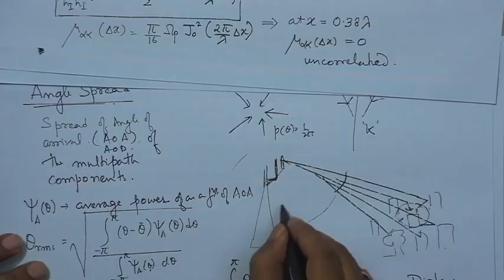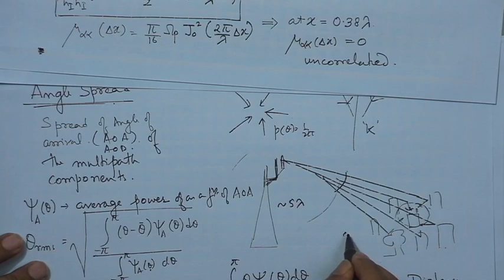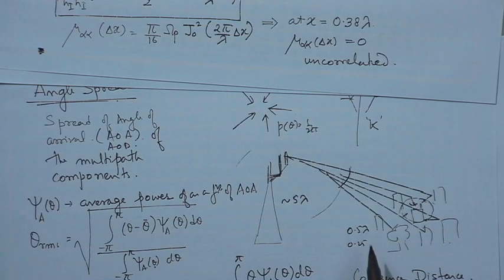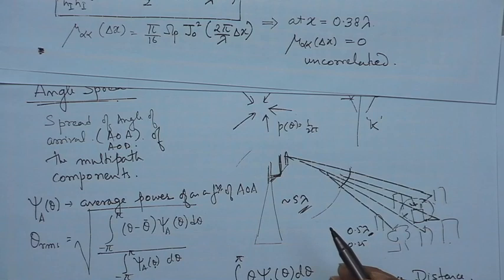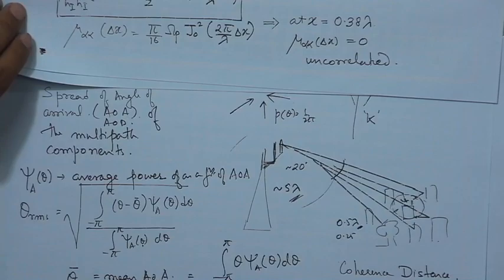At the base station, the coherence distance is roughly 5 lambda, whereas at the mobile it is nearly 0.5 lambda. For 2D isotropic scattering, at lambda/2 spacing signals are uncorrelated; at 0.25 lambda, correlation is about 70%, so we want antenna spacing of lambda/2 to ensure uncorrelated signals. At the base station, the required spacing becomes around 5 lambda because the angle of arrival spans only about 20 to 30 degrees. This is one of the very important features as we move into the study of spatial channels.